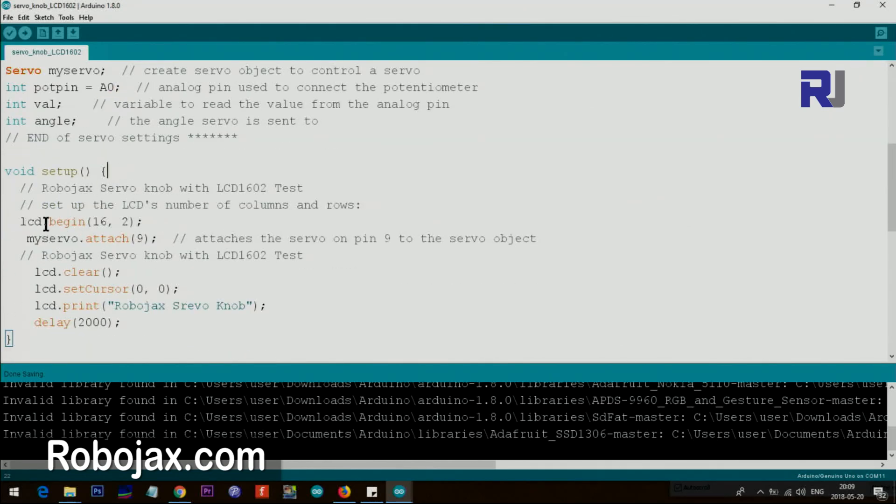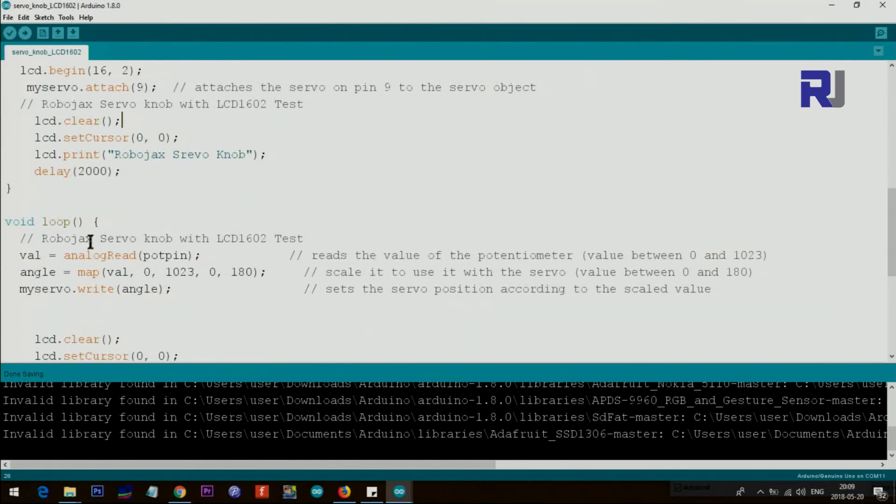From here to here, we say lcd.begin. This is initializing the LCD because our LCD has 16 characters and two lines. We mention that here. After that, this is for the servo, and we say servo is connected to pin 9. So we are attaching servo to pin 9. This is a text that just prints and it says 'Servo Knob' on the screen, which I'm going to explain inside the loop.